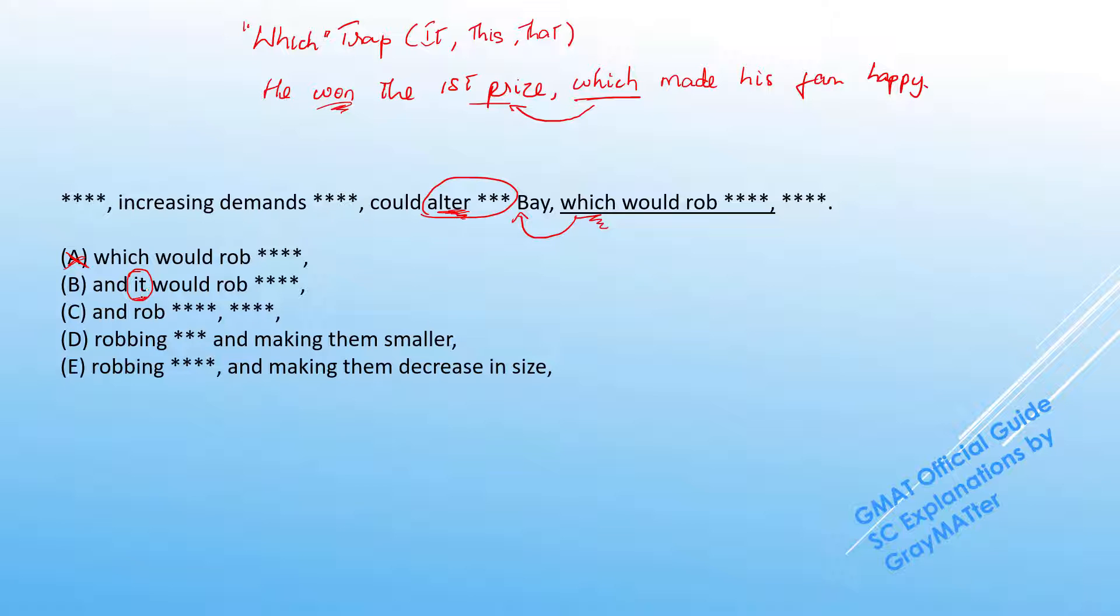Even if you argue that it could be the increasing demands, first of all, it's a clear mismatch in number because increasing demands is plural and it is singular. And secondly, it wouldn't make logical sense to say that the increasing demands will rob the oysters of the flavor. B goes off.